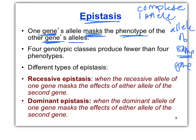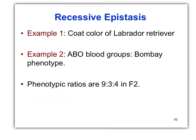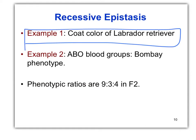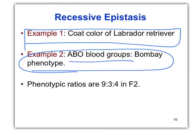What the heck does that mean? Let's walk through these. Here's the definition. For recessive epistasis, we're going to use coat color in Labrador retrievers as our example. We also have this Bombay phenotype in the ABO blood groups — you can look that up. But our main pattern that we're looking for is a phenotypic ratio of 9 to 3 to 4 in the F2.